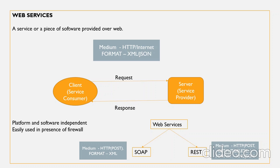For example, you have an application built with Java on a Linux platform using an Oracle database as its back-end, and there is another application built on C++ over a Windows platform using a MySQL database. Now if these two applications have to communicate with each other over the internet, web services make it possible — they'll be able to communicate with each other.